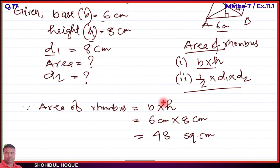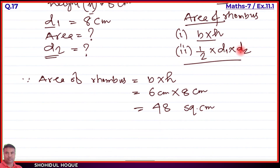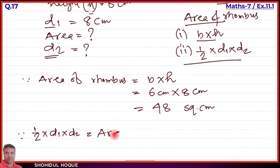We have found the area of the rhombus as 48 square centimeters. Now for the second part, we need to find d2 using the diagonal formula. Using the diagonal formula: Area = half × d1 × d2. Let us write this formula again: half × d1 × d2 = Area of rhombus.